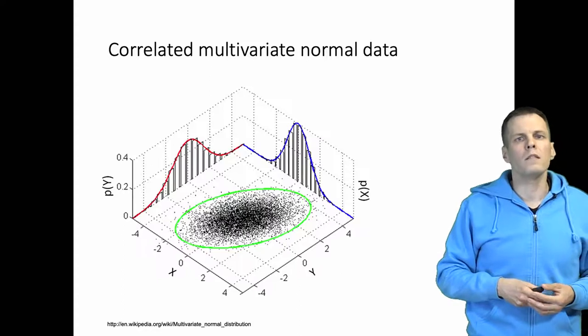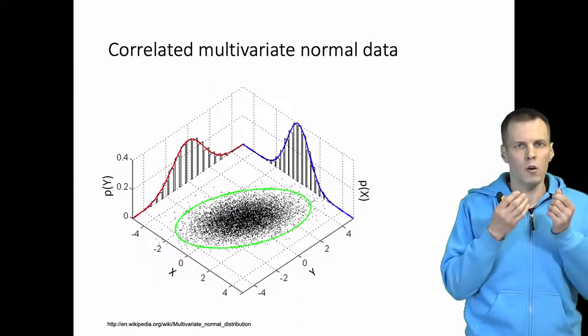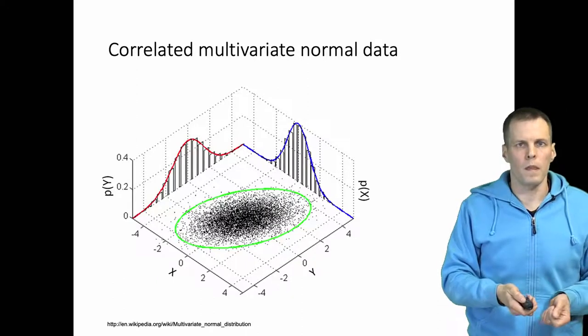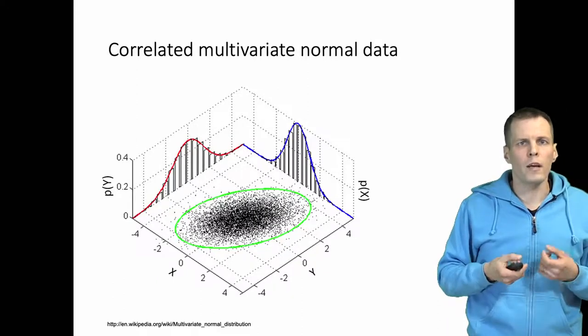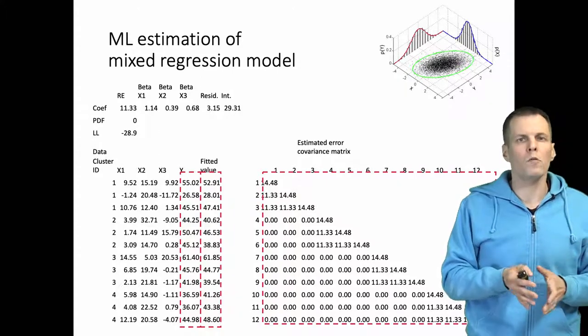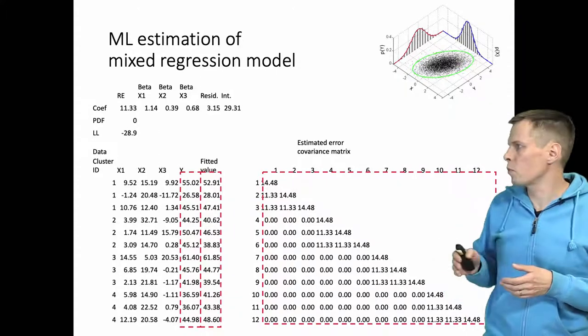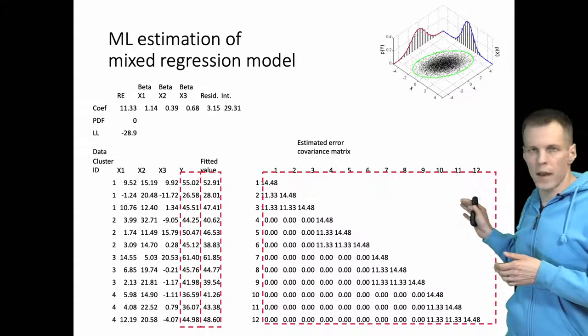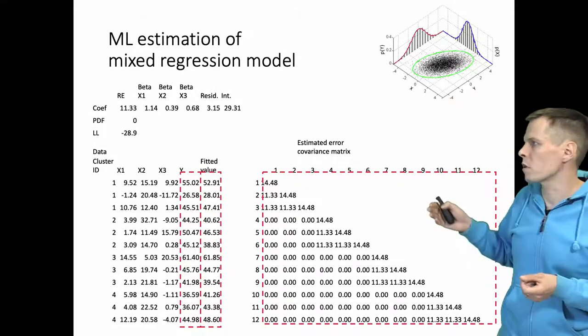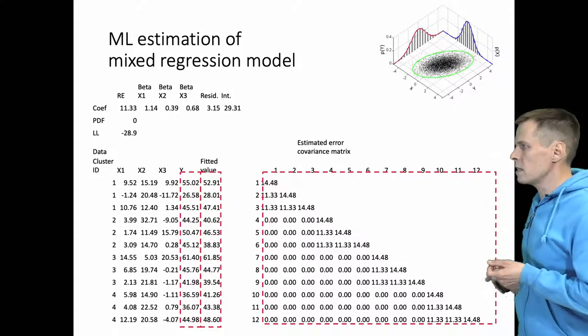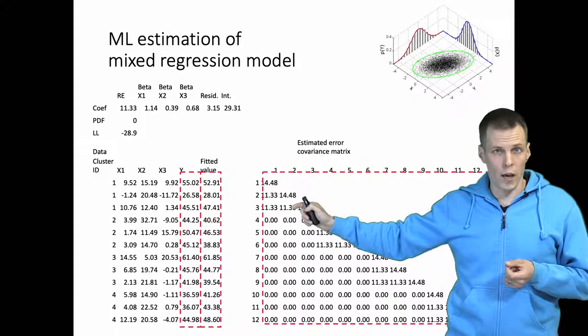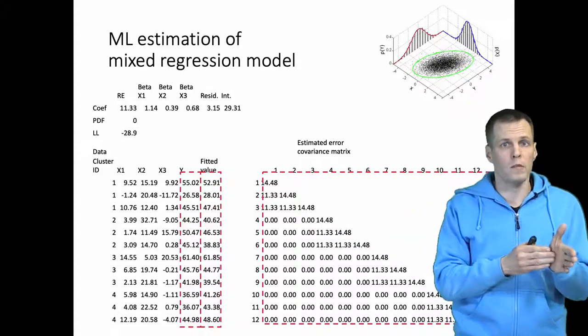How do we then use this principle in maximum likelihood estimates? Instead of looking at each observation at a time, what we do conceptually is that we estimate an error covariance matrix for all the error terms. So the idea is that these error terms are no longer independent. On the diagonal is the variation of the error term, and these off-diagonal elements are the covariances within clusters.